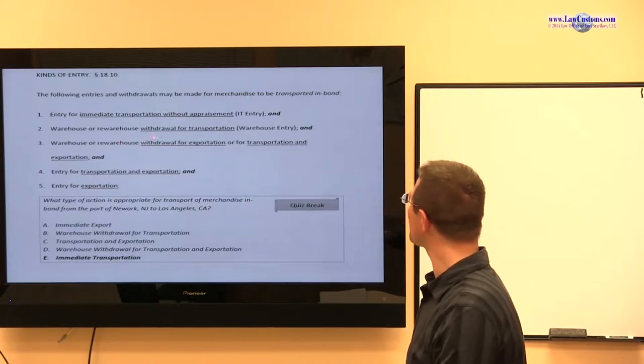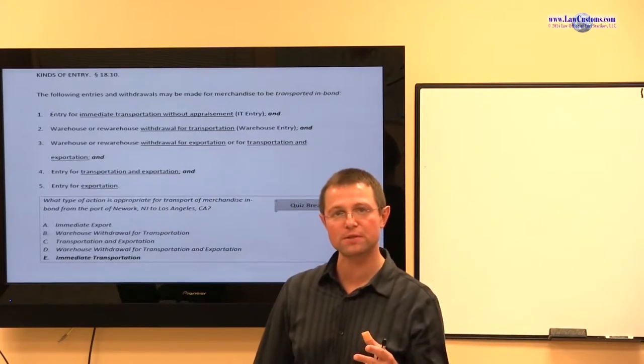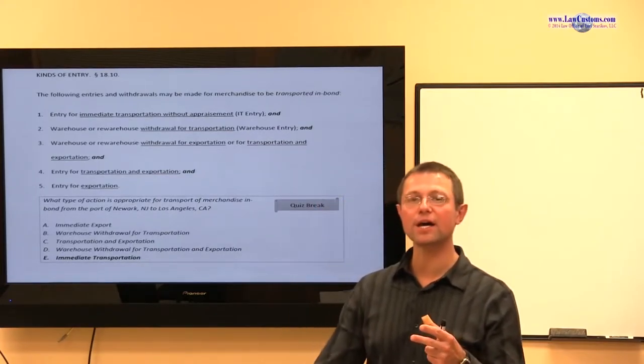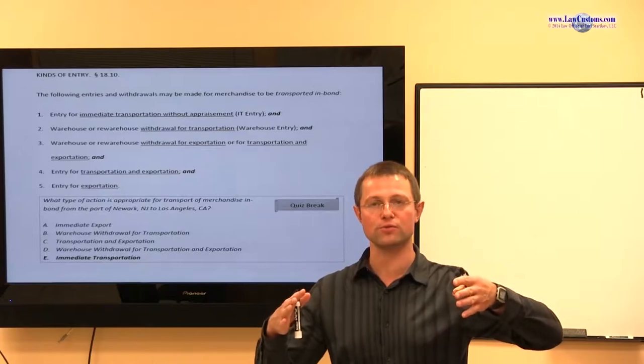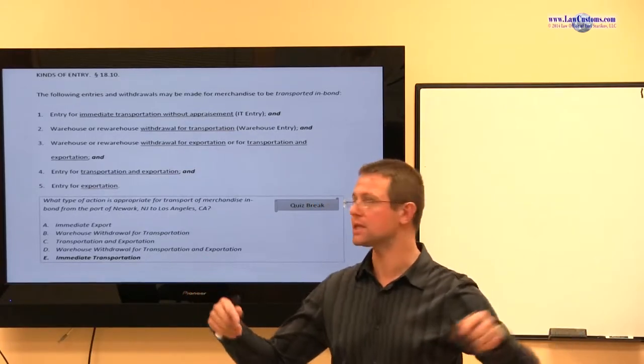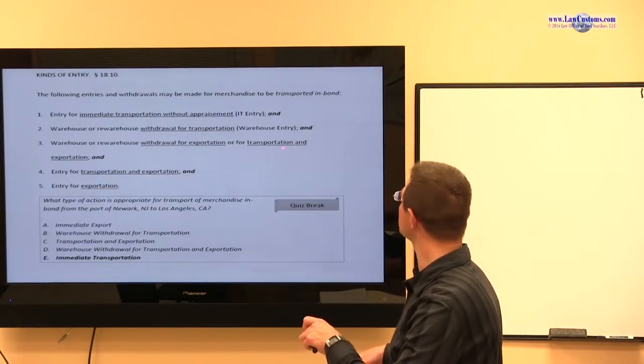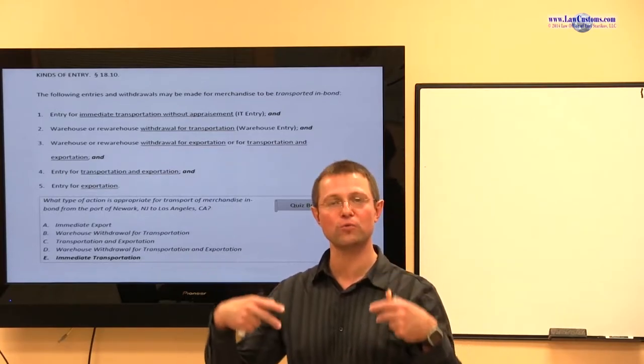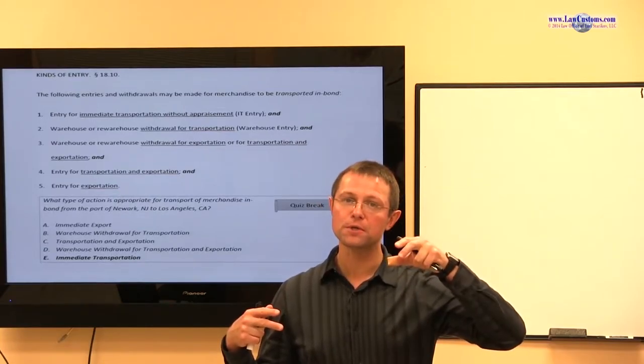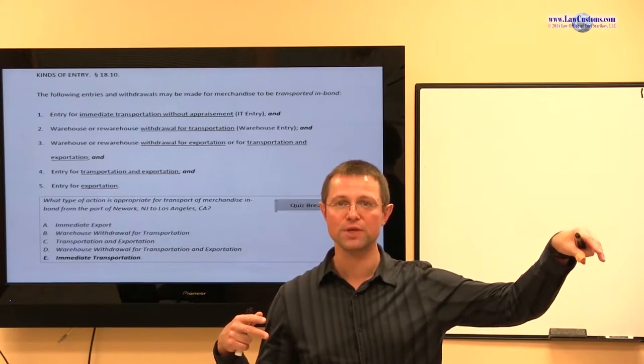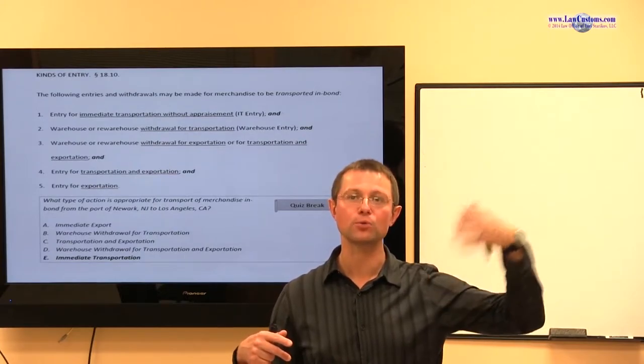Remember, you have a warehouse and a re-warehouse withdrawal for transportation. So in other words, you have a warehouse entry and you would like to take it out from the warehouse and clear it at some place else other than the port where the warehouse is located in the United States. You have warehouse, re-warehouse withdrawal for exportation and transportation for exportation, which means you take it out from warehouse and you're not planning or intending to have the product shipped to some kind of point in the United States as a final destination, but you're rather intending it to be shipped in order to export it out of the country.